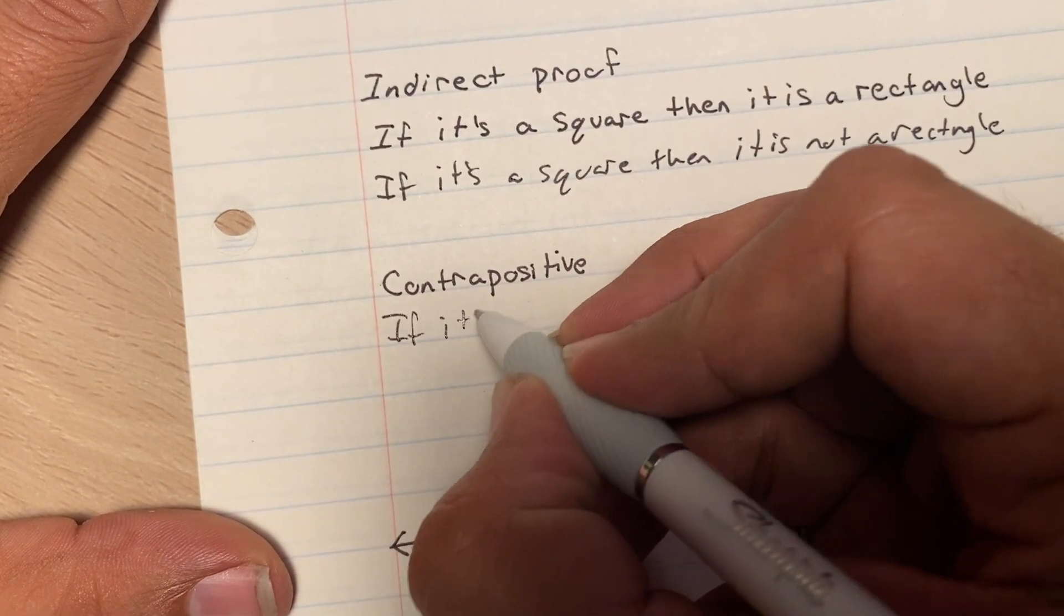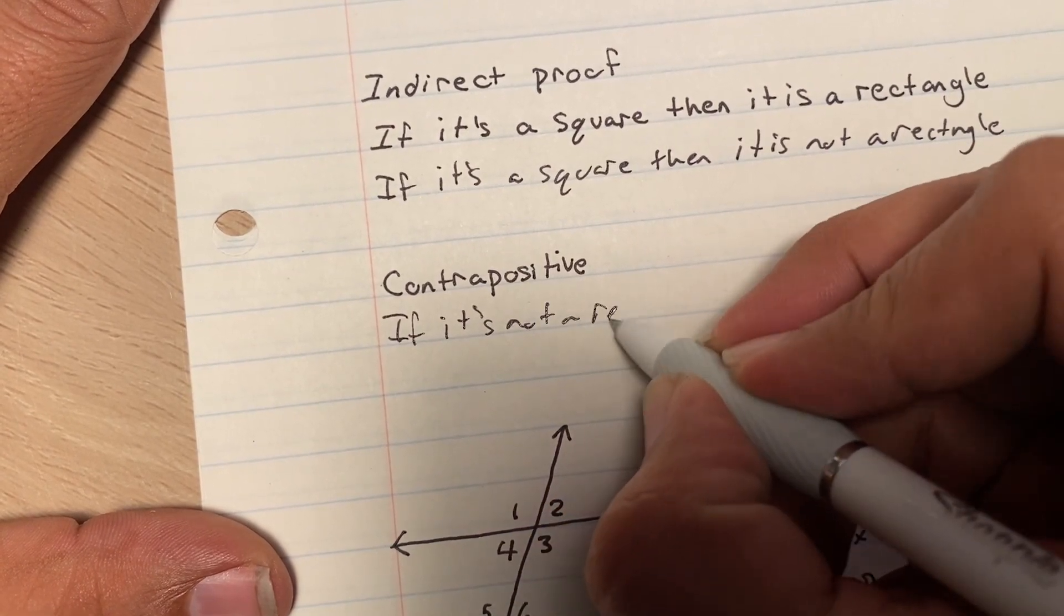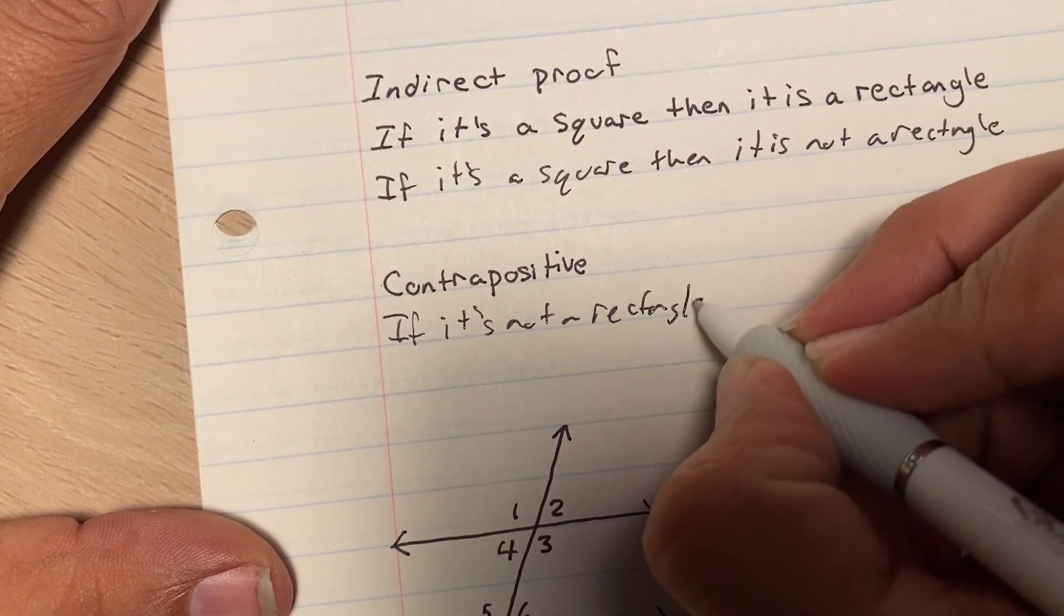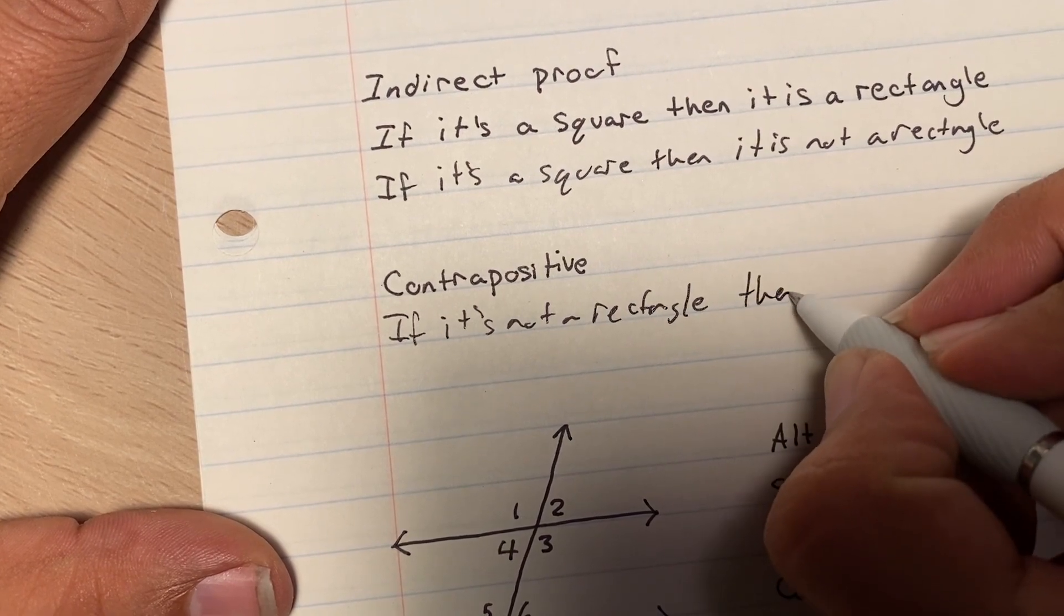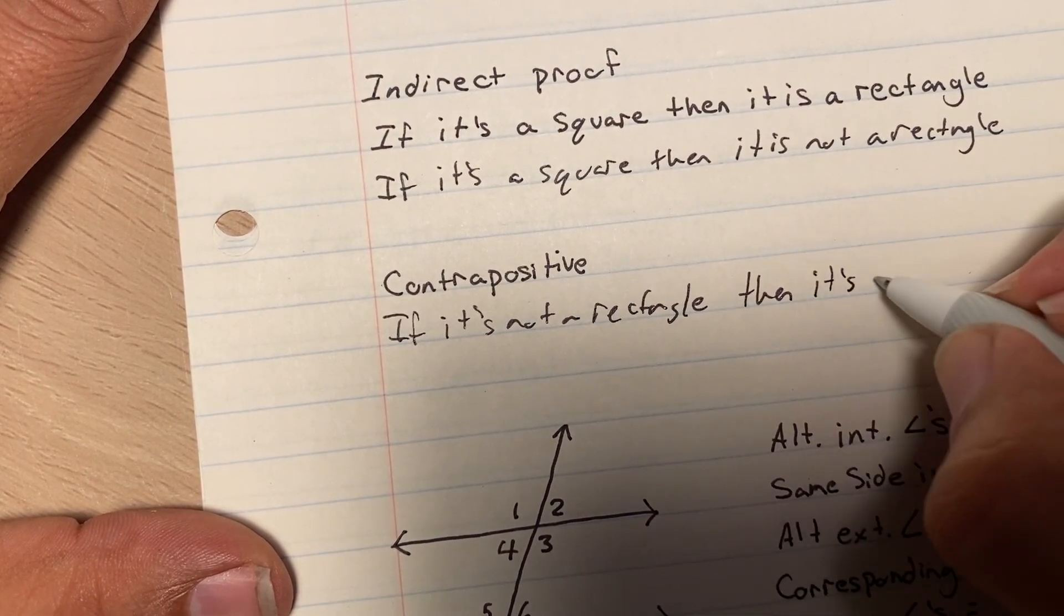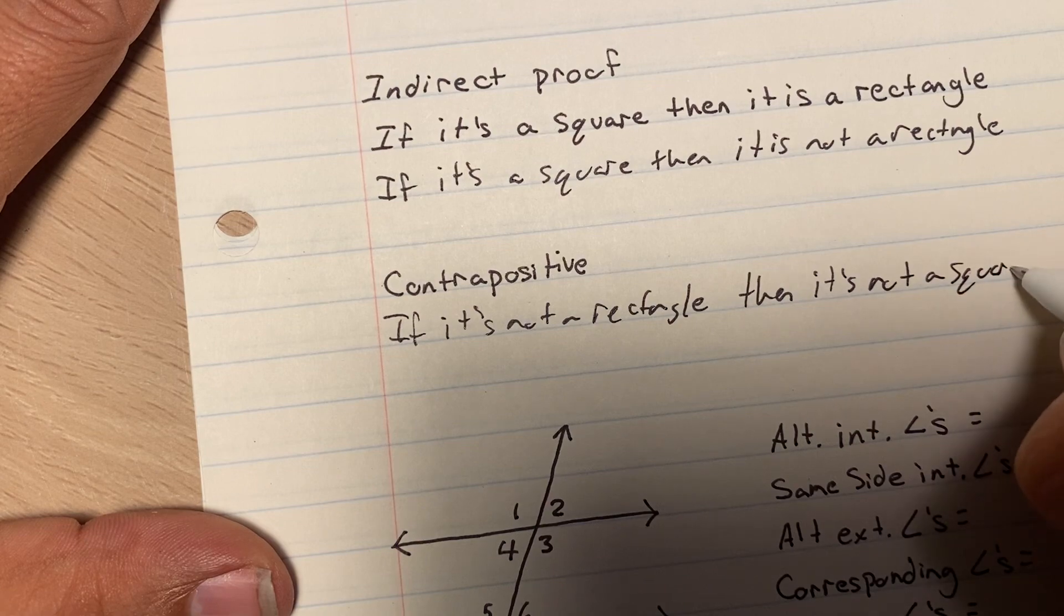if it's not a rectangle, then it's not a square.